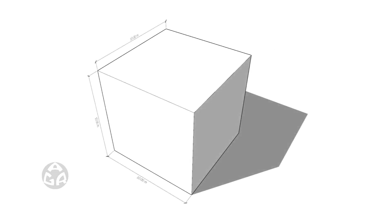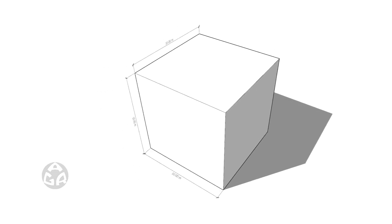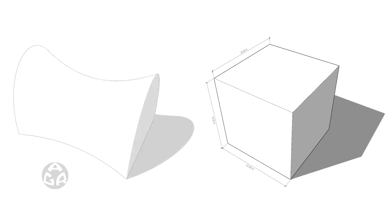To create the form, we need two shapes. First, a cube of 10 meters on each side, and second, a saddle shape to subtract from the cube.